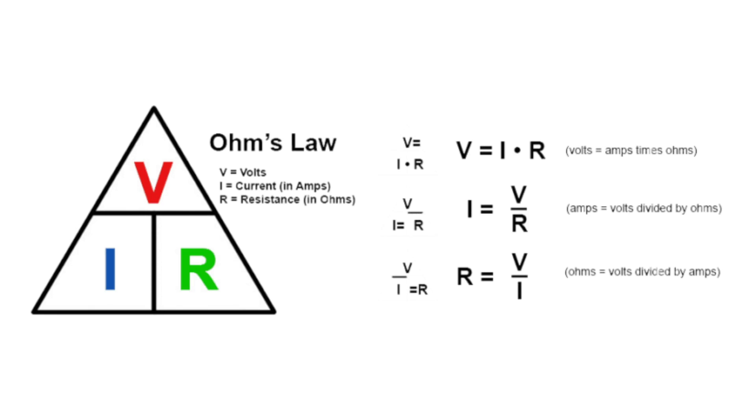Ohm's law tells us that as impedance decreases at a given voltage, the electrical current will increase. Your amplifier is only capable of supplying a finite level of current before blowing a fuse, entering protect mode, or being damaged. That's the main reason it's so important to ensure that for a given power output, the impedance of the speaker circuit falls within the impedance rating of the amplifier.